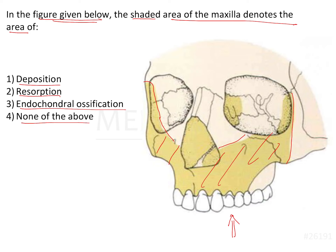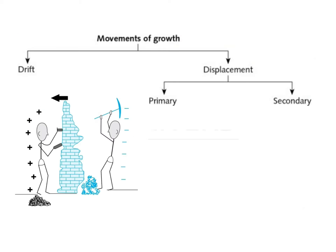To understand this, we need to first understand what are the different types of growth movements that take place in the craniofacial skeleton. The types of growth movements can be of two types: either they can be a drifting kind of movement, or they can be a displacement type of movement. Drifting is basically the movement of the bone that is seen because of remodeling.